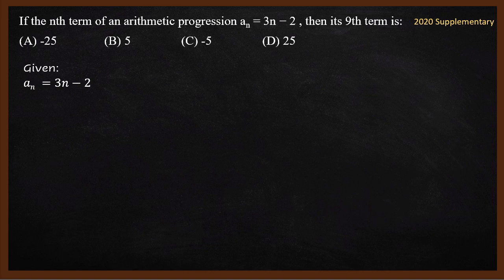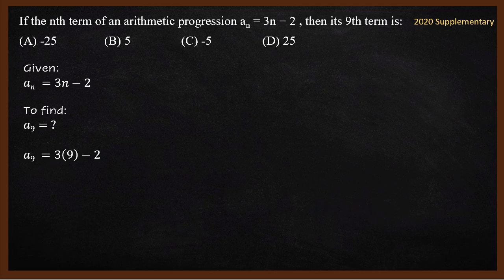How to solve this problem? aₙ equals 3n - 2. Pure substitution. In substitution, 3n - 2 where n is 9, substitute 9. So what do you get? 9 times 3, 27. 27 minus 2, 25. Answer 25. Ninth term is 25. So answer option D.